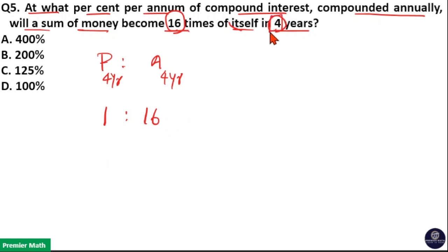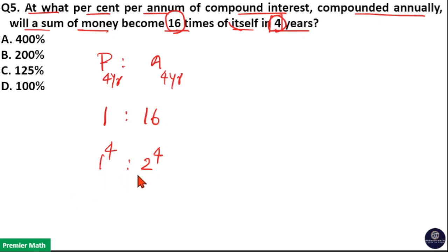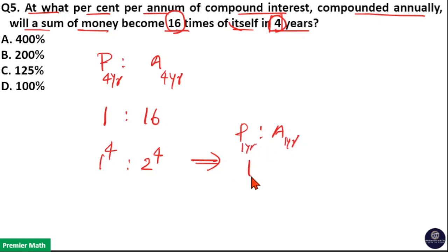The number of years is equal to 4, so write 1 to 16 in power of 4. If I write 16 in terms of power of 4, it becomes 2 raised to 4, and 1 becomes 1 raised to 4. Here you can see 1 unit is the principal and 2 units is the amount, so the principal to amount ratio for 1 year is 1 to 2, because 4 is the number of years.